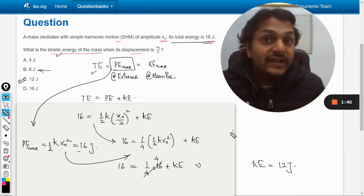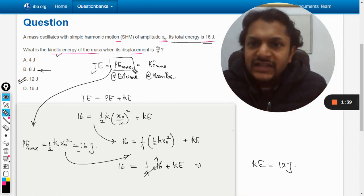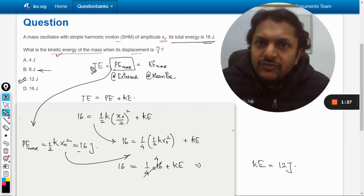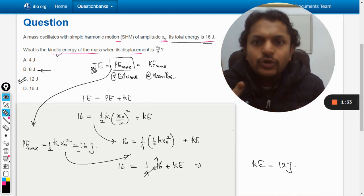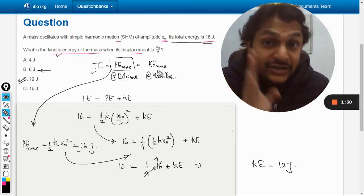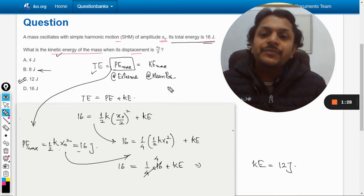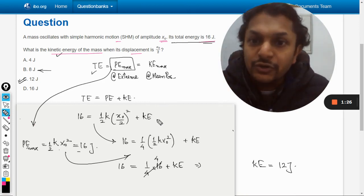But at the extreme positions, kinetic energy becomes 0, so we can say that the total potential energy is equal to the total energy. And at the mean position, the potential energy becomes 0, so the total or the maximum possible kinetic energy is equal to the total energy. All these formulas have been utilized here.